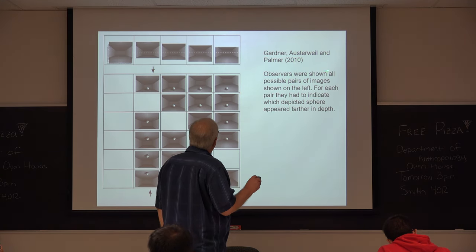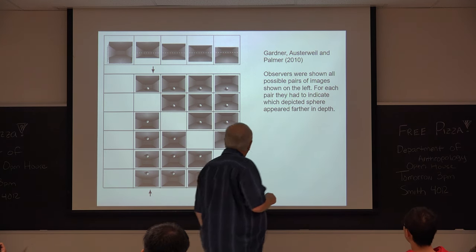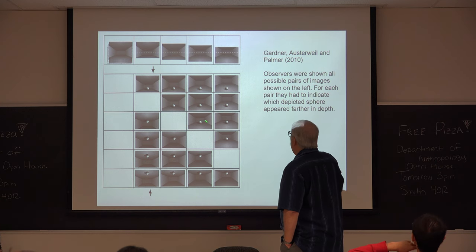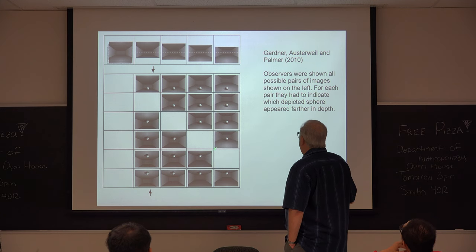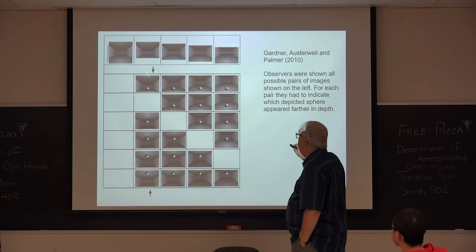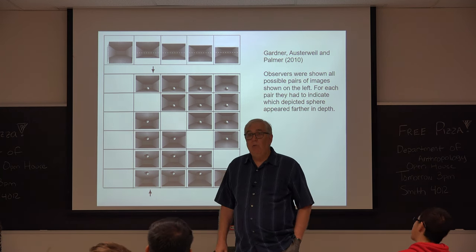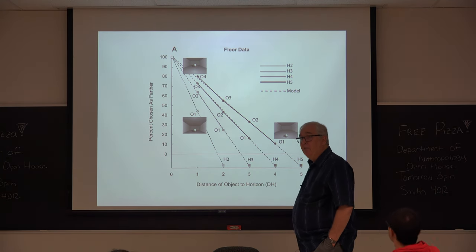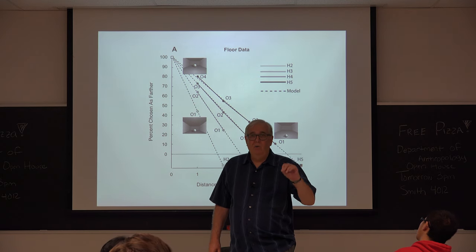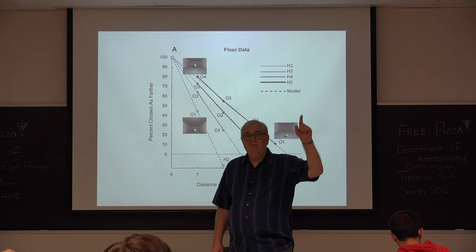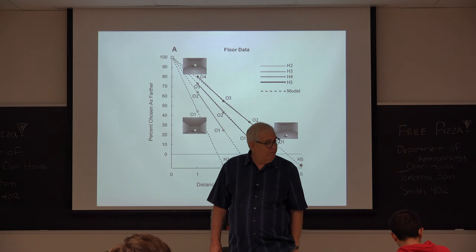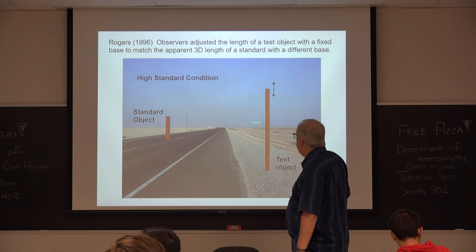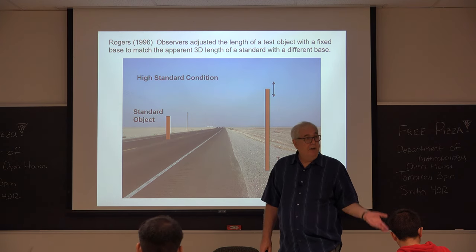A study by a Berkeley group used displays with balls that could be on the ceiling or the floor. Subjects judged which ball looked closer. The data could be predicted perfectly by where the base of the object was relative to the horizon. You get the opposite effect for objects on the ceiling versus the floor. This all points to the idea that how objects are related to the environment really does seem to be a source of information that people use.